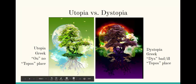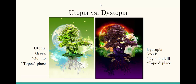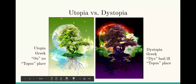On the flip side, we have dystopia. If a utopia is a perfect place, then a dystopia is a place where everything has gone wrong. 'Dys' means bad or ill, and 'topos' is still place. Modeled after utopia, it's a place that, perhaps due to many different reasons — it could be oppression from an overzealous government, disease, natural disaster, or deprivation — has caused everything to be really bad.